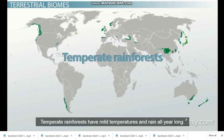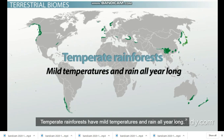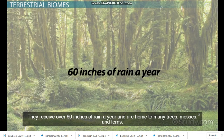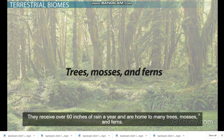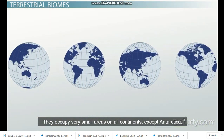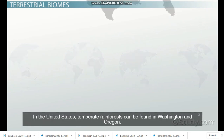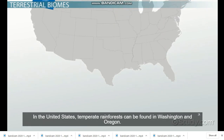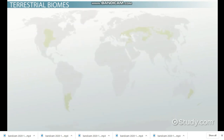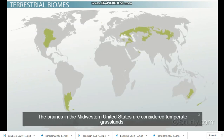Temperate rainforests have mild temperatures and rain all year long. They receive over 60 inches of rain a year and are home to many trees, mosses, and ferns. They occupy very small areas on all continents except Antarctica. In the United States, temperate rainforests can be found in Washington and Oregon.